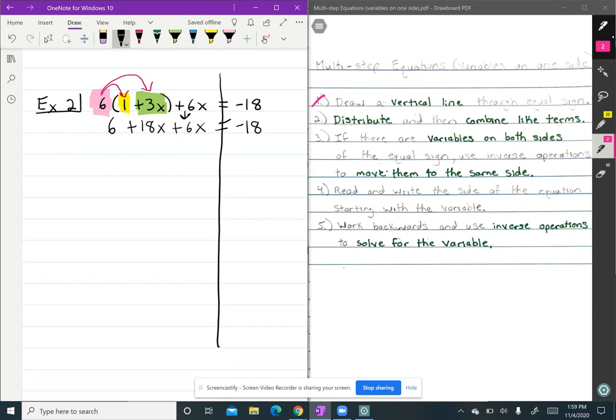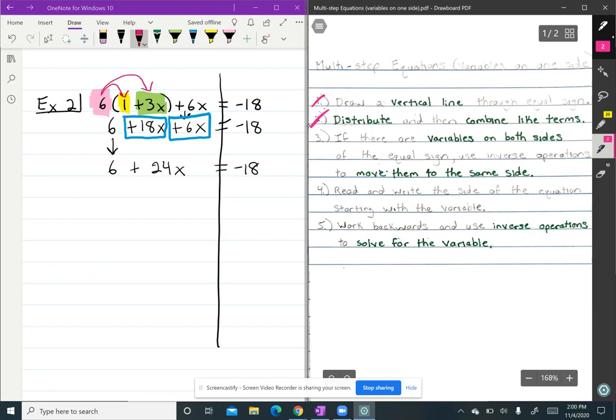Now we're still not done with step two because it says and then combine like terms. We can combine positive 18 X with positive 6 X. So the six just drops down. 18 X plus 6 X will give us positive 24 X. And then again, negative 18 drops down. So now we finish step two.